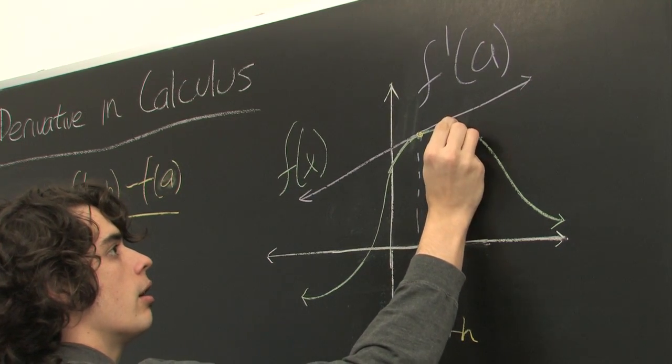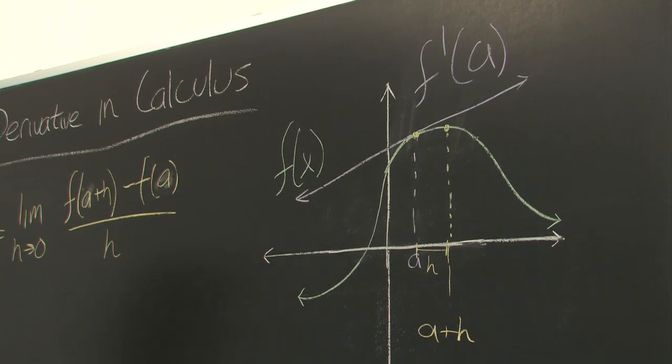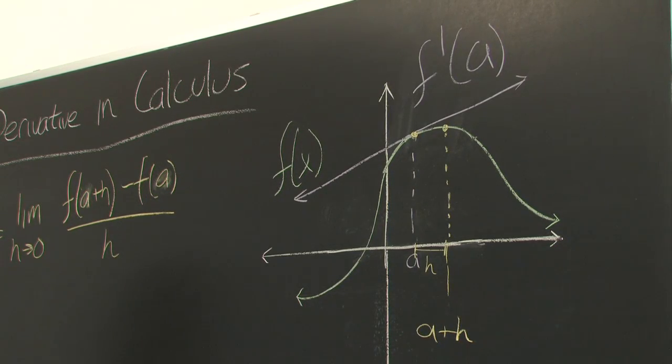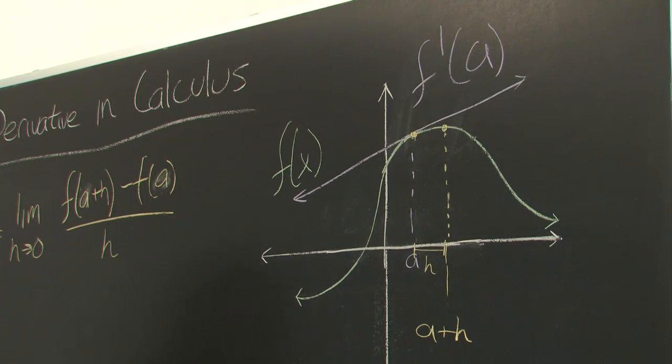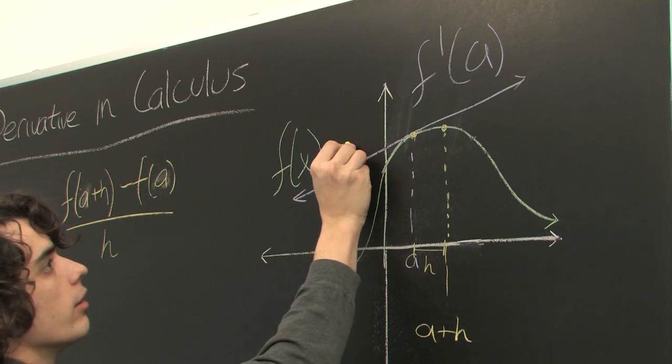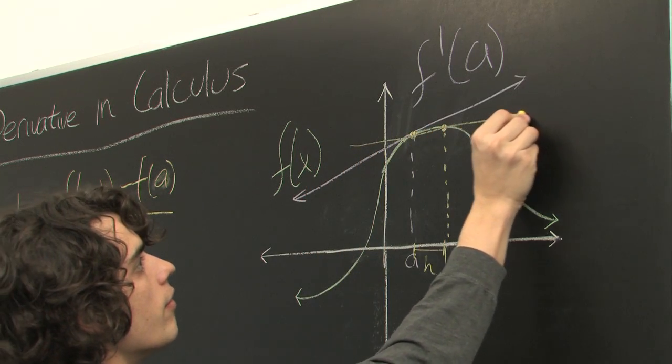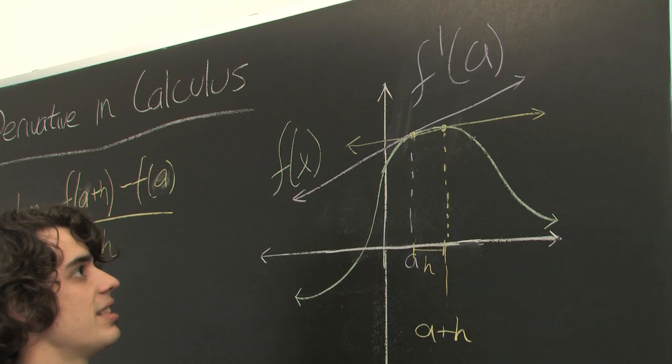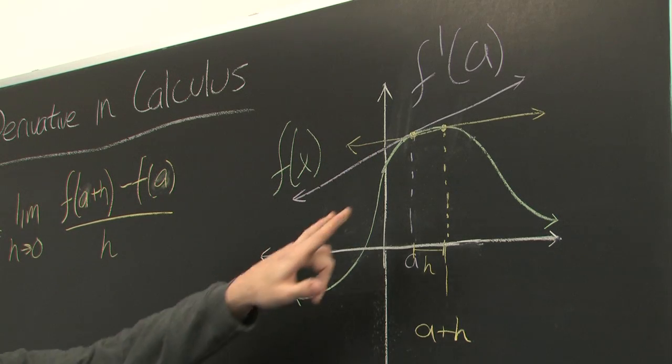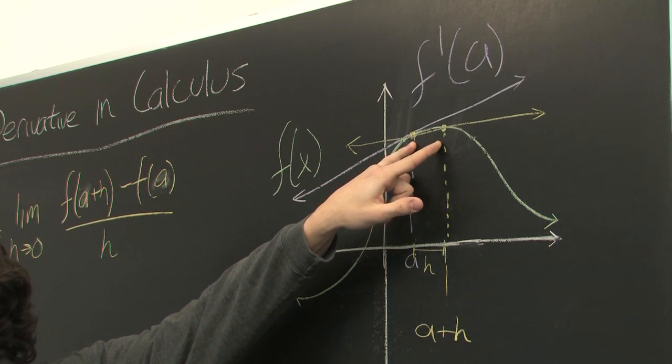And correspondingly, that point is f of a plus h. What we're looking at here is the slope of this secant line, the line that connects these two points on the graph.